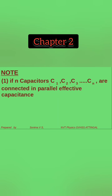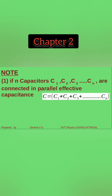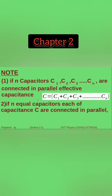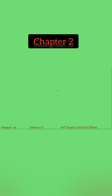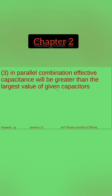If N capacitors C1, C2, C3, and Cn are connected in parallel, then the effective capacitance C can be written as C1 plus C2 plus C3 plus ... plus Cn. In parallel combination, effective capacitance will be greater than the largest value of the given capacitors.